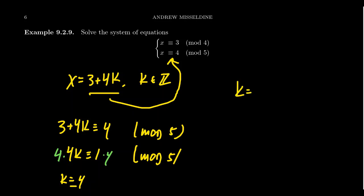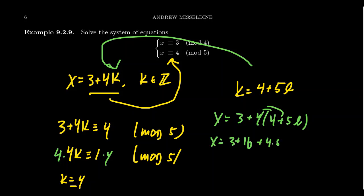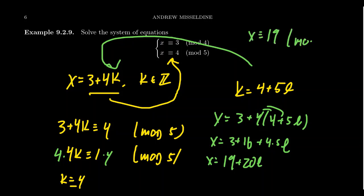Since k ≡ 4 (mod 5), we write k = 4 + 5l for some integer l. Back-substituting into x = 3 + 4k: x = 3 + 4(4 + 5l) = 3 + 16 + 20l = 19 + 20l. Therefore x ≡ 19 (mod 20), where 20 = 4×5 is the product of the two moduli. So 19 is the unique solution to this system of congruences modulo 20.